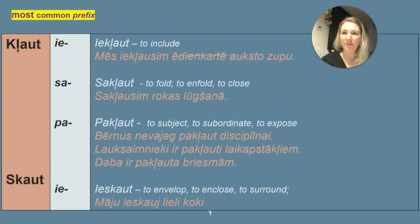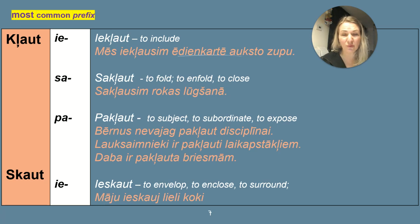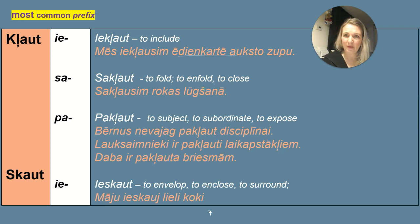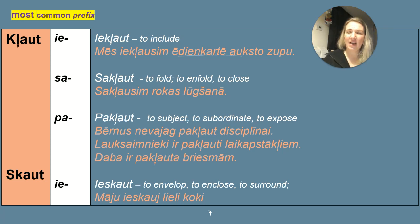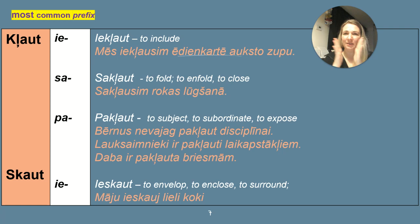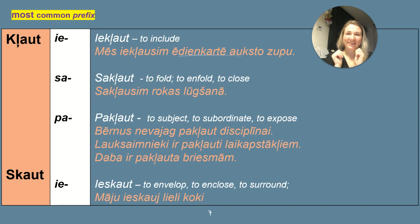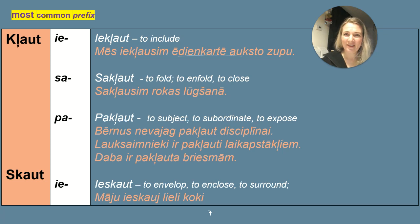Now the same verbs with prefixes. The verb iekļaut — ie means in — means to include. Mēs iekļausim ēdienkartē auksto zupu — we will include the cold soup in the menu. Sakļaut means to fold, to close together. Sakļausim rokas lūgšanai — let's close our hands together to pray. I do apologize for my English — I hope it's good enough to get the message across.